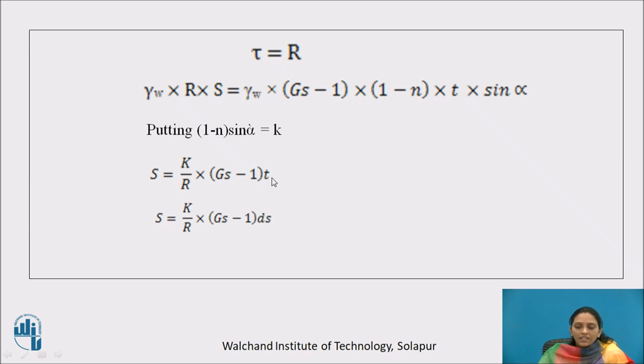If we consider one single solid particle, then t becomes the function of the diameter of that solid particle. So S equals K upon R into Gs minus 1 into ds, where ds is the diameter of single solid particle. Instead of thickness, we consider here one single solid particle.